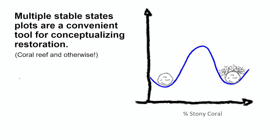Many of us have gone out and observed that natural systems have never really been at equilibrium, and they're especially not at equilibrium now in the Anthropocene.